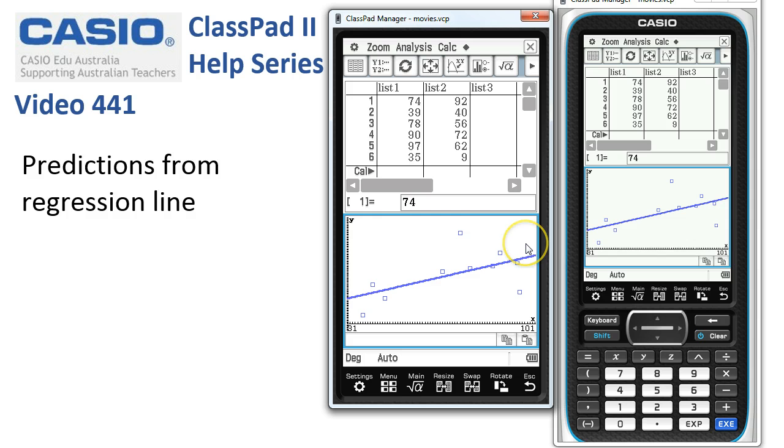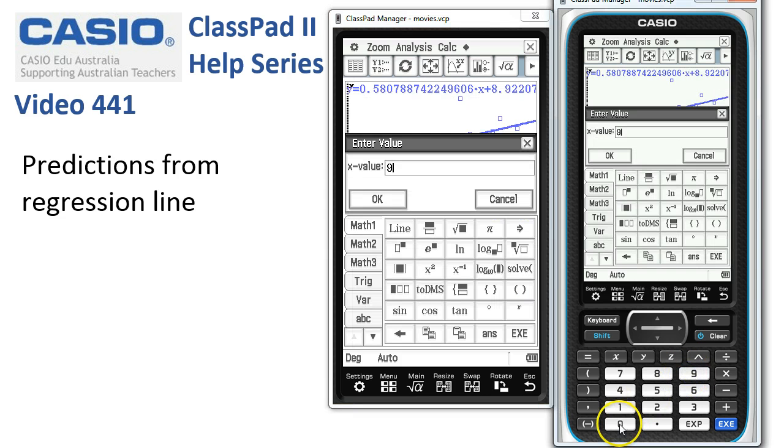Then we've got our graph set up here. Now, to do a prediction, my preferred way is simply to tap onto the trace icon, and that puts the cursor on the regression line. If we want to do a prediction for when X is 90, we simply type 90 from the keyboard, and you'll notice that a little dialog box pops up: Enter Value.